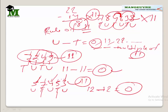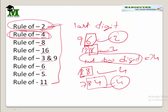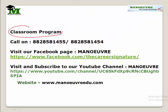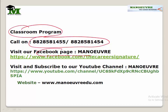So that is the rule of 11. I hope the idea is clear. We have discussed all the rules: 2, 4, 8, 16, 3, 9, 6, 5, and 11. Just take some numbers and do practice — it will help you when you come across questions. Those who want to join the classroom program can call on the given number. Do visit our Facebook page, Manover, where you get daily updates on exam notifications, cut-offs, and paper patterns.